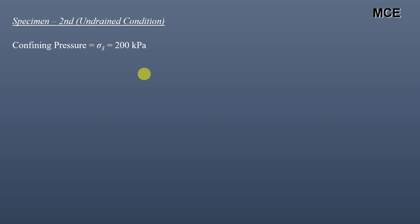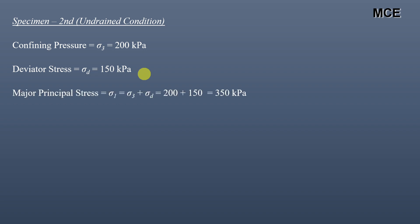For specimen two, we are performing the consolidated undrained triaxial test on the same clay sample. In undrained conditions we always get the total stress parameters. The confining pressure, which is the total minor principal stress, equals 200 kilopascal, the deviator stress is 150 kilopascal, and the major principal stress equals 200 plus 150, which is 350 kilopascal.